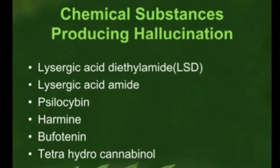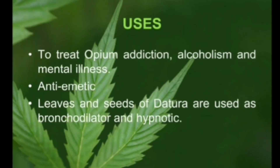Why would we want to give a hallucinogen? If you have alcohol addicts or opium addicts, hallucinogens can be used. They can also be used as an anti-emetic — if a patient has consumed poison and you want them to vomit everything out, you can give a hallucinogen. Datura stramonium leaves and seeds are used as a bronchodilator — for patients with breathing problems — and also as a hypnotic for psychiatric treatment.